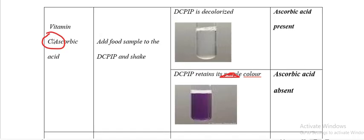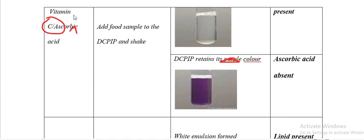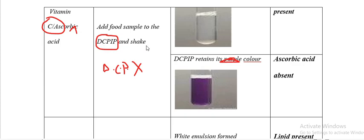Common mistakes with vitamin C: writing 'vitamin' and forgetting C, or writing vitamin K — that is wrong. DCPIP should be in capital letters, not with abbreviation dots. Mixing small and capital letters is also wrong. Most students begin with the food sample, which is wrong — DCPIP must be put into the test tube first, then the food sample follows.